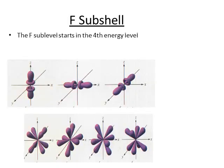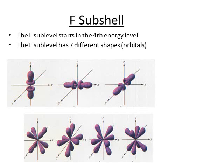The F subshell begins in the fourth energy level. Because it has seven different orbitals, these orbitals can hold two electrons each, it can hold a maximum of 14 electrons.